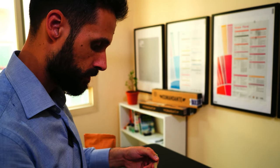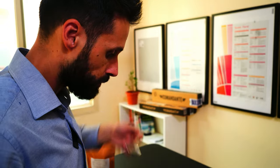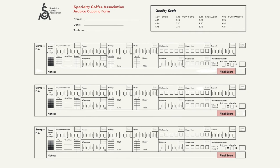Once we have started slurping, we begin evaluating the different characteristics of the coffee, such as flavor, aftertaste, acidity, body, balance, uniformity, sweetness, clean cup, and overall score. After this, we compute all the scores together and give the final grade.